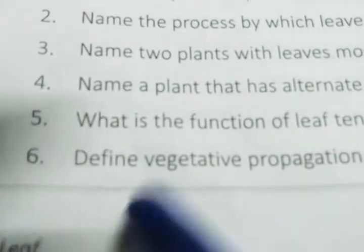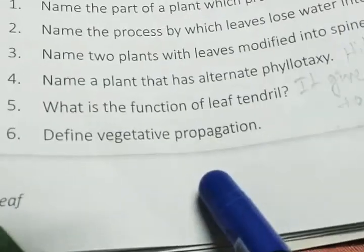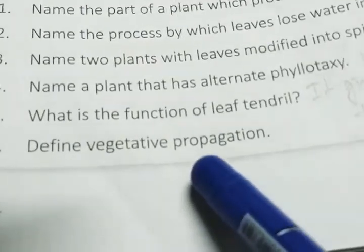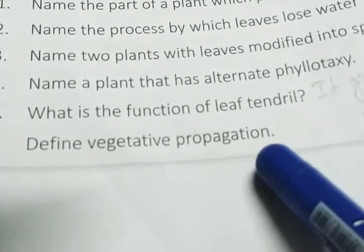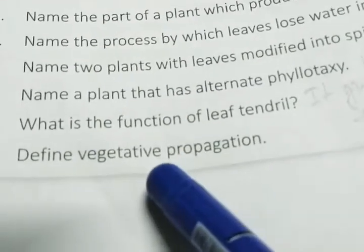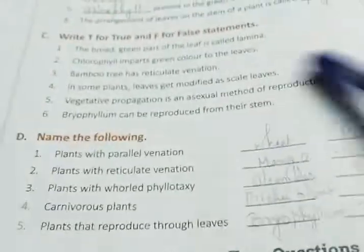Name a plant that has alternate phyllotaxis — hibiscus. What is the function of a leaf tendril? It is a modification of leaf that gives support to the weaker stem to climb in an upward direction. Next, define vegetative propagation: it is a process by which a plant produces new plants from vegetative parts like stem, root, and leaves.